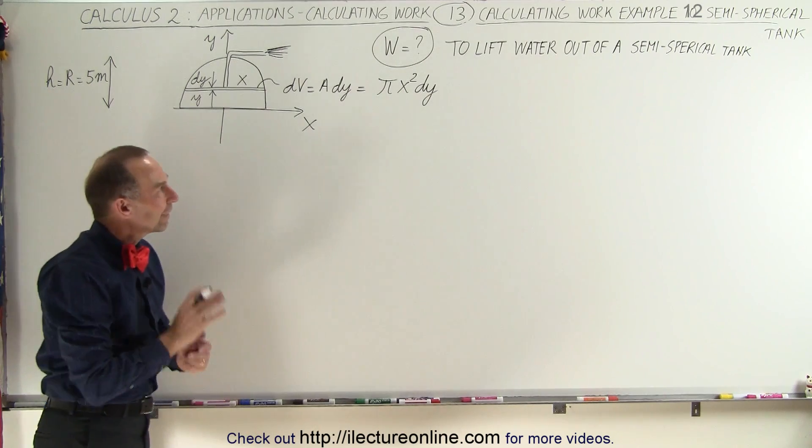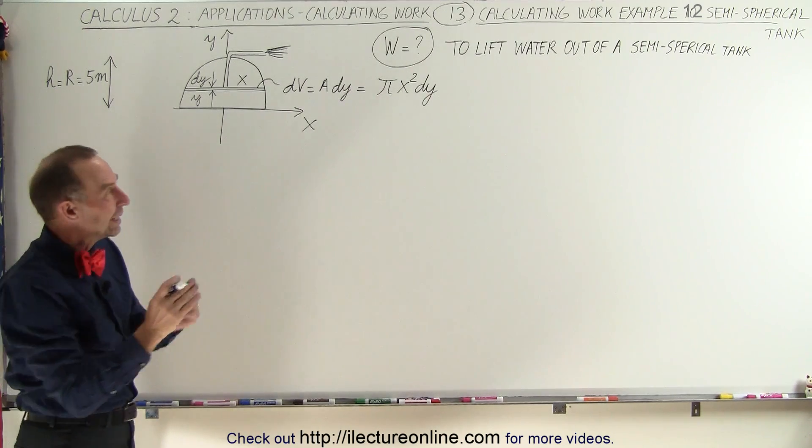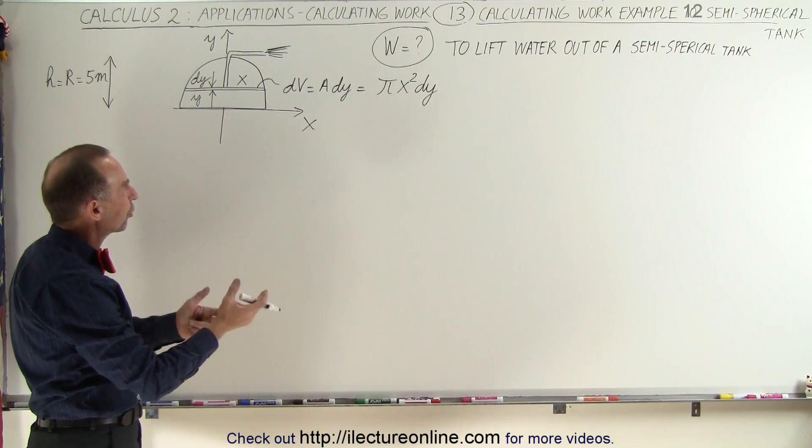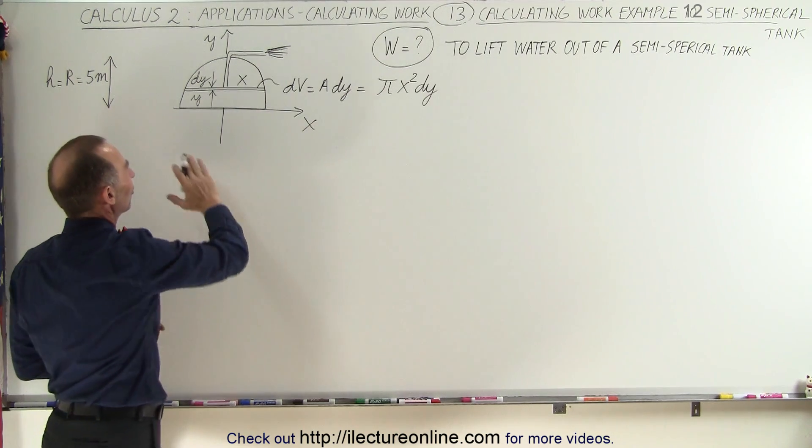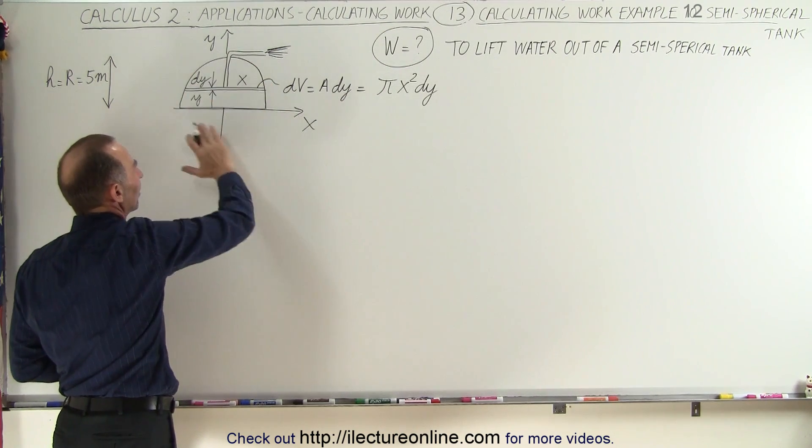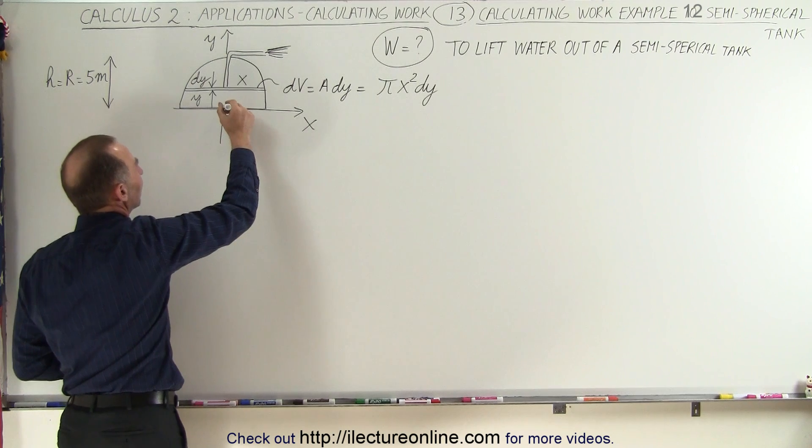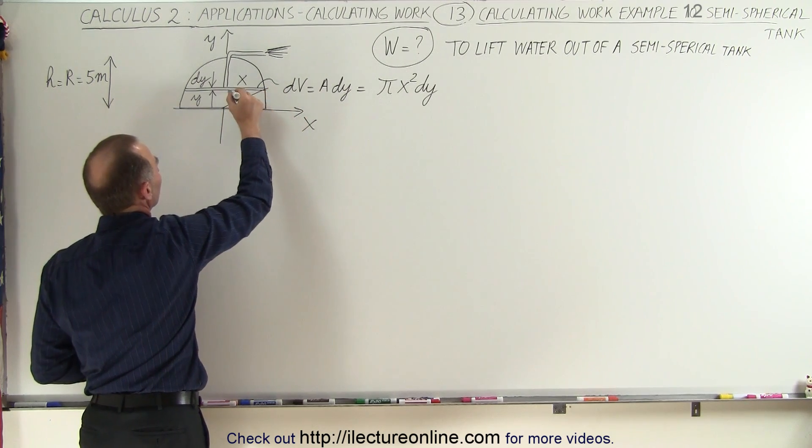Now we have an x² and a dy, so we need to somehow change the x² in terms of y, but since this cross-sectional area here is a semi-circle, we can then take this distance r here to the edge.